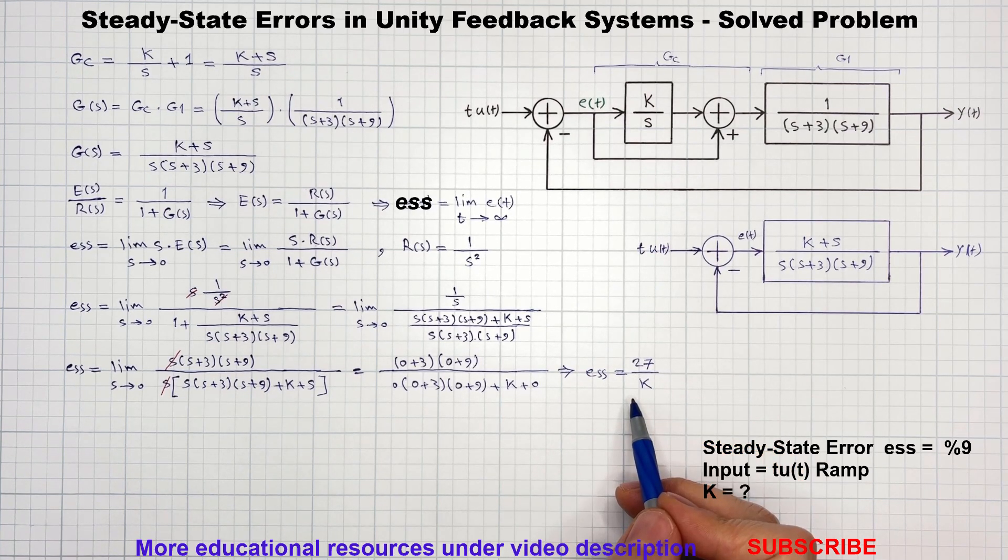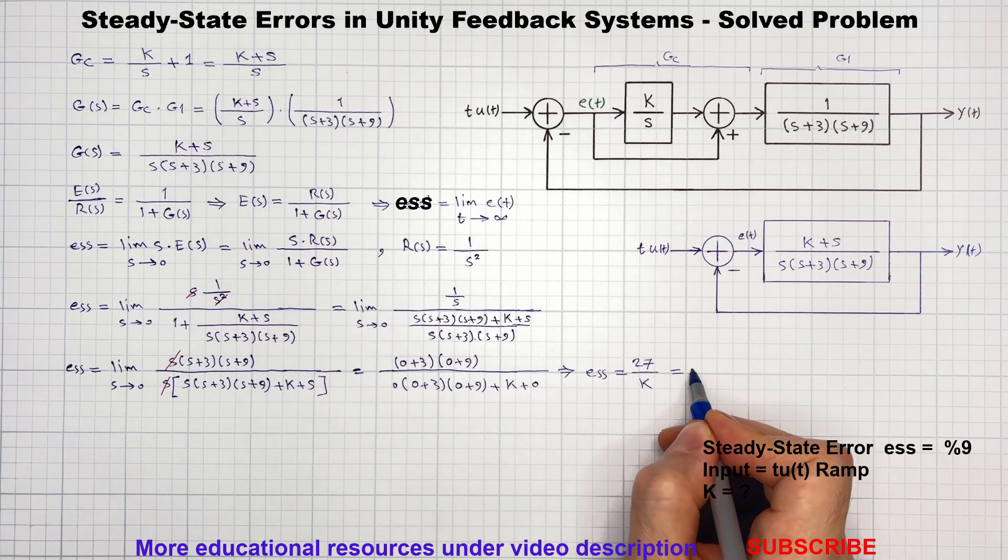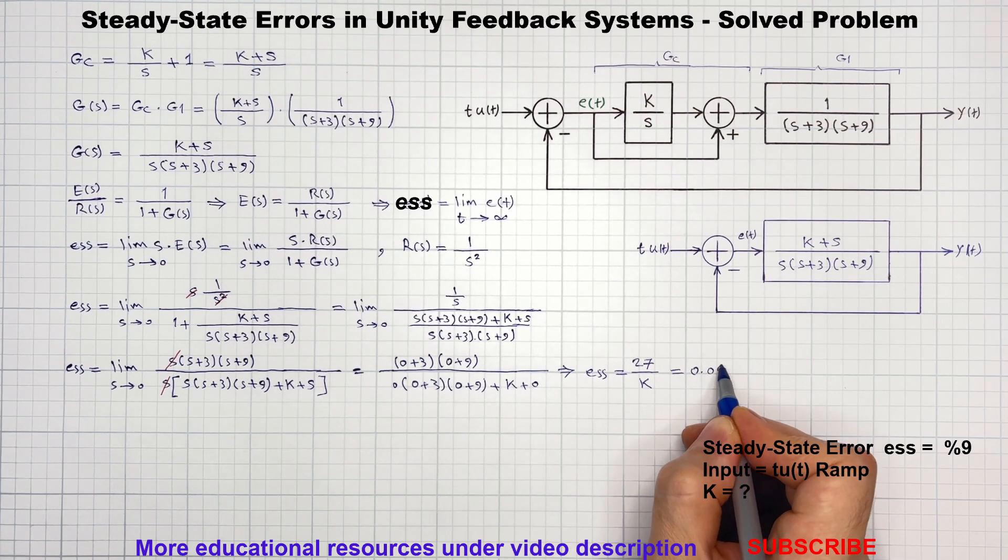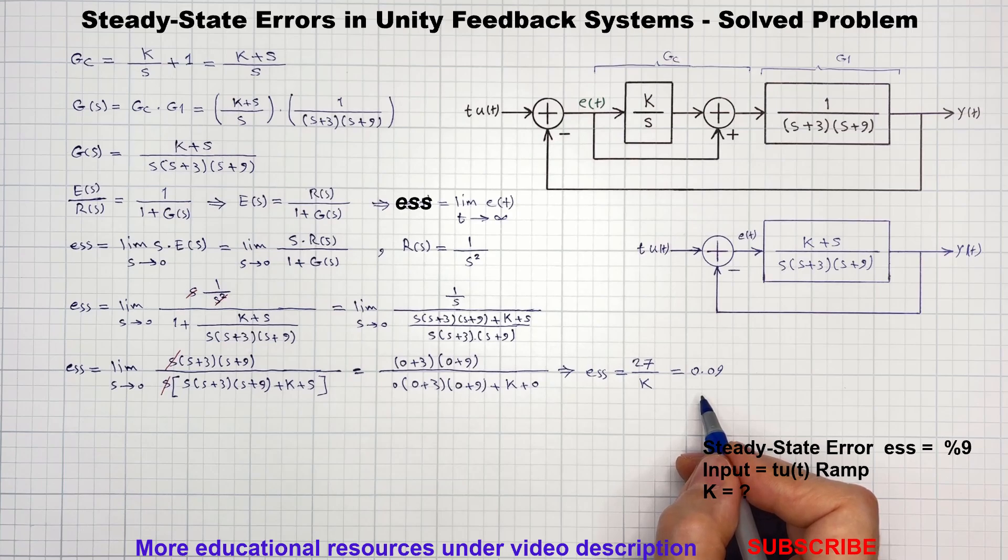Now, if you recall, we were told that the steady state error should be 9% or 0.09, and solving for K gives us the answer.